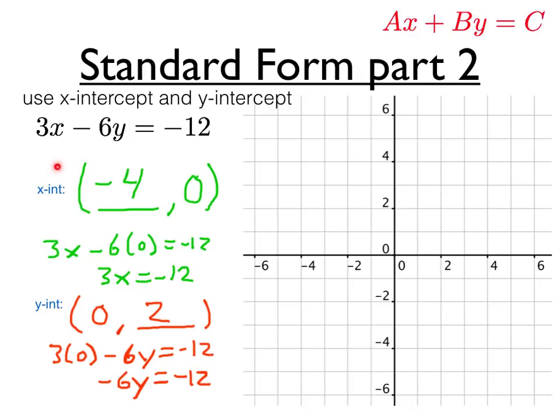Now we have two points, negative 4, 0, and 0, 2. If we plot those points, we'll connect the dots and then we'll have the line. There's negative 4, 0, and 0, 2. Then all that's left to do is to connect the dots.